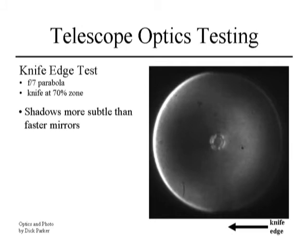Here's the same mirror at F7. The F7 parabola is very close to a sphere, so the departure is small and the shadows are far less distinct. For an F7 or F8, you only need to define the center, the 70% zone, and the edge to know you'll get a good mirror when testing this way. There's both goodness and badness to that in conducting the test.